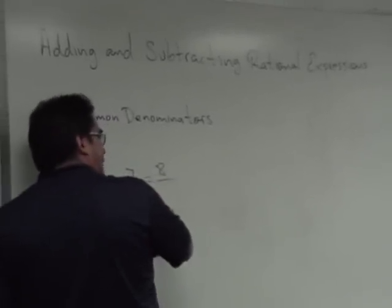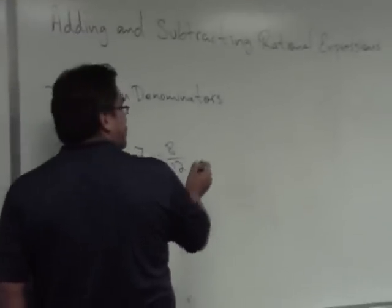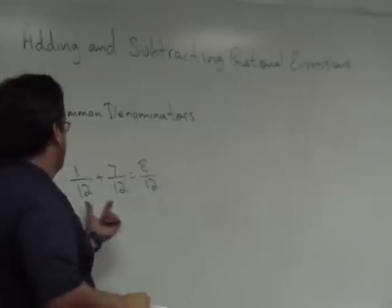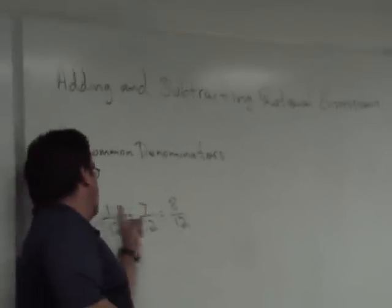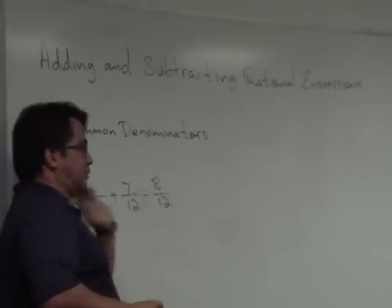The point is that if you're adding 12s, you're going to get 12s in your answer. You have a common denominator. This is the size of the fraction that you're adding. You're adding 12s, you're going to get 12s. How many? Well, you've got 1 here and 7 here. That's a total of 8.